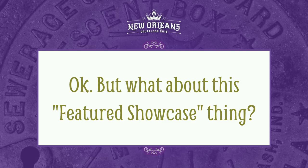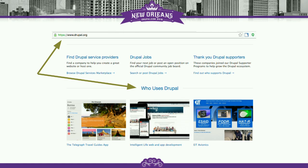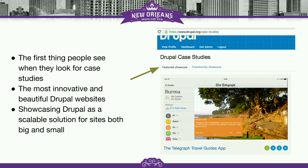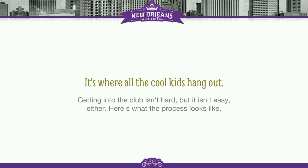So, the featured showcase. When you go to Drupal.org and you scroll to the bottom, you see a section that says 'Who uses Drupal?' and there are three sites. If you click on that button, it takes you to the featured showcase. The featured showcase is the first thing that people see when they go looking for case studies, because you have to click over to the next tab to get to the community showcase. It is a collection of the most innovative and beautiful Drupal websites, and it showcases Drupal as a solution. The featured showcase is where all the cool kids hang out on Drupal.org, and it's actually not all that difficult to get your case study in — it's just a time-consuming process.